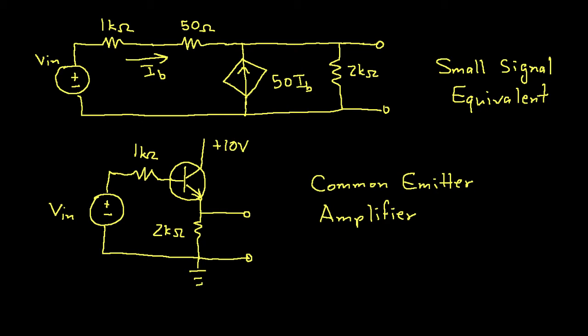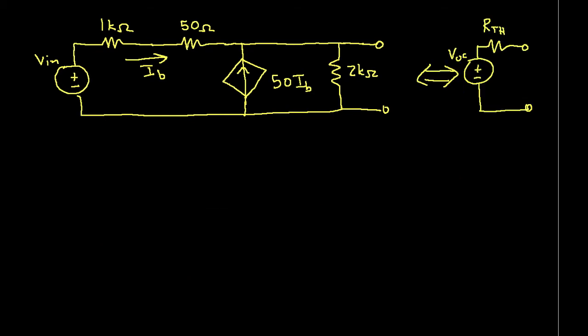This circuit approximates the behavior of the common emitter amplifier under specific operating conditions. Our goal is to find the Thevenin equivalent circuit of the small signal model. To find this Thevenin equivalent circuit, we need to find the open circuit voltage and R-Thevenin. So let's begin by finding the open circuit voltage.